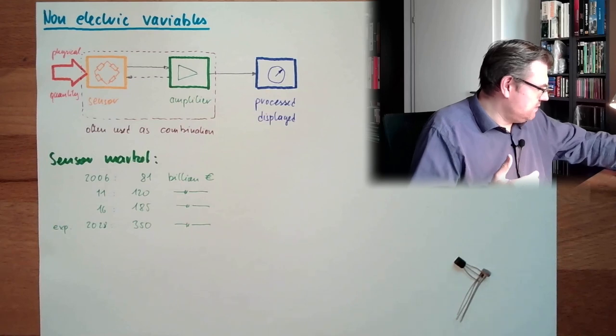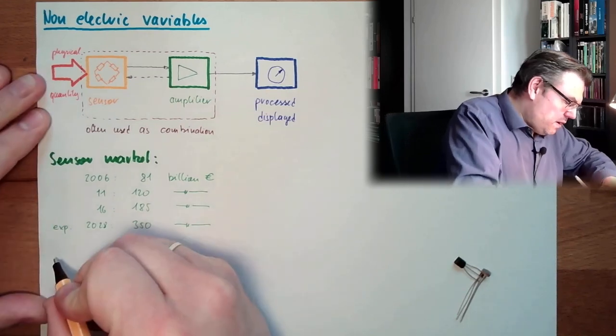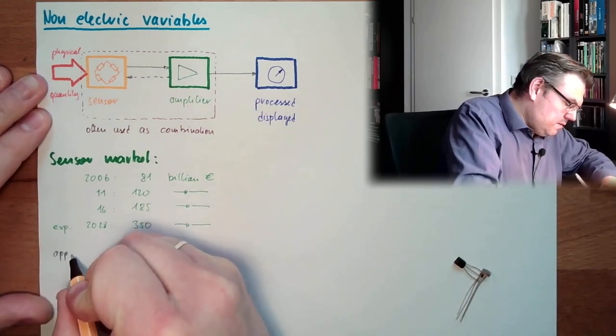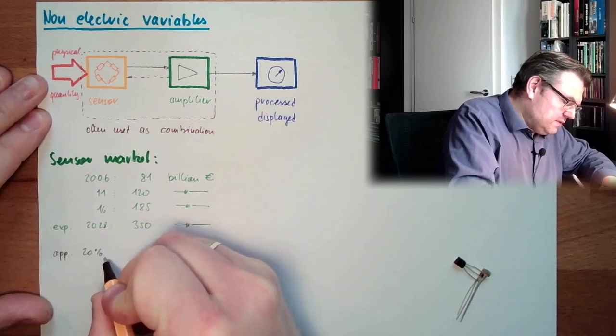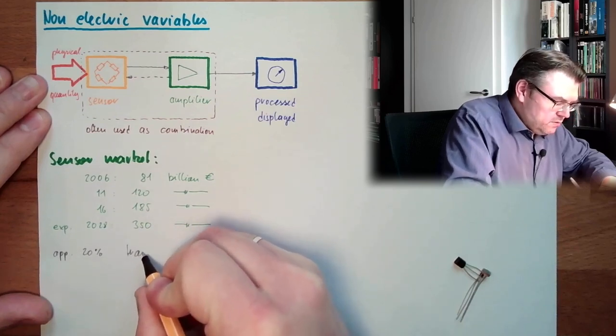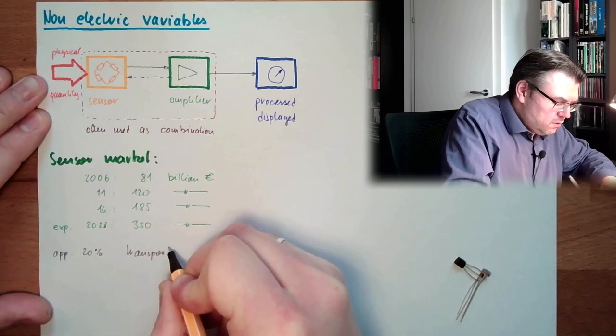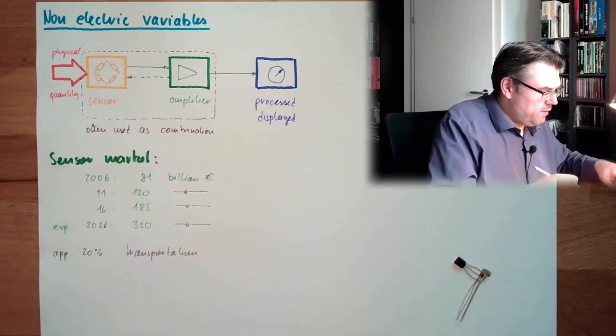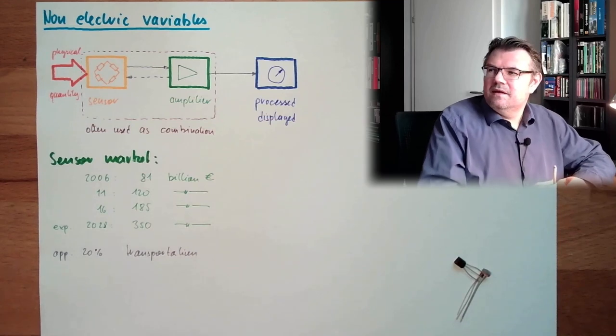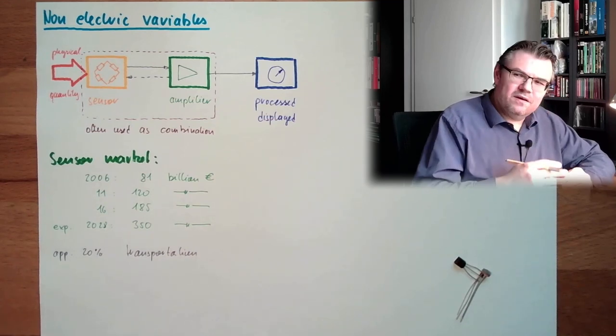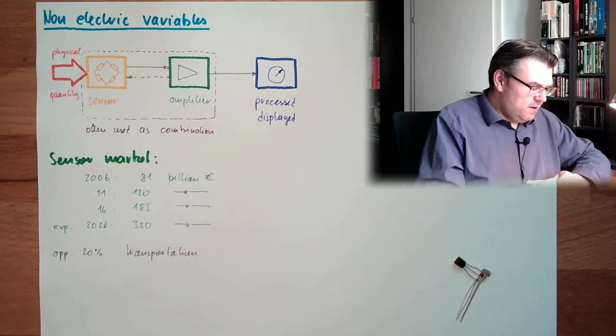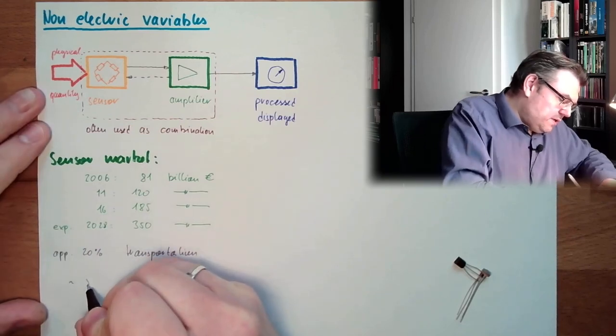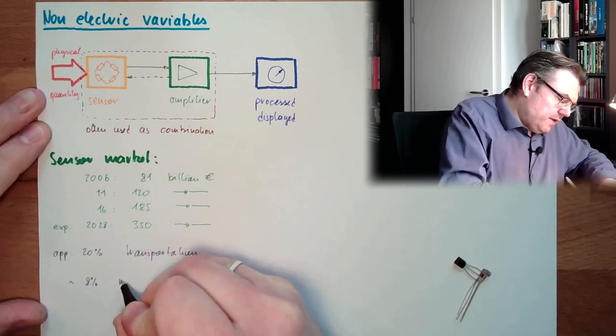Around 20%, approximately 20% of sensors are in transportation. Around 20%. IT and communication, also 20%. And where are we?